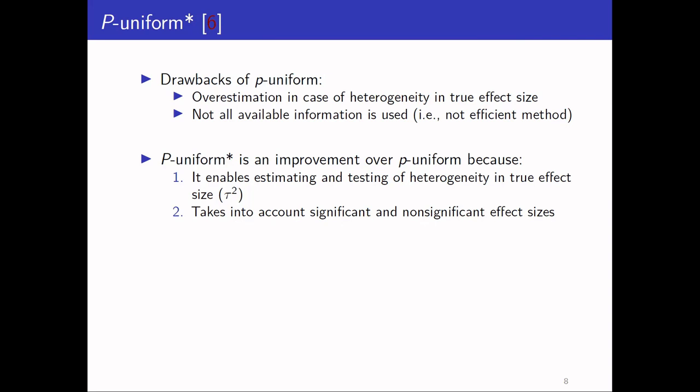For those reasons, we improved the method and called it the PUNIFORM star method. It is an improvement because, first, it enables estimating and testing of heterogeneity in the true effect size, and because of that it does not overestimate the effect size in case of heterogeneity. The second advantage is that it takes into account both significant and non-significant effect sizes, making it a more efficient method that uses all available information.